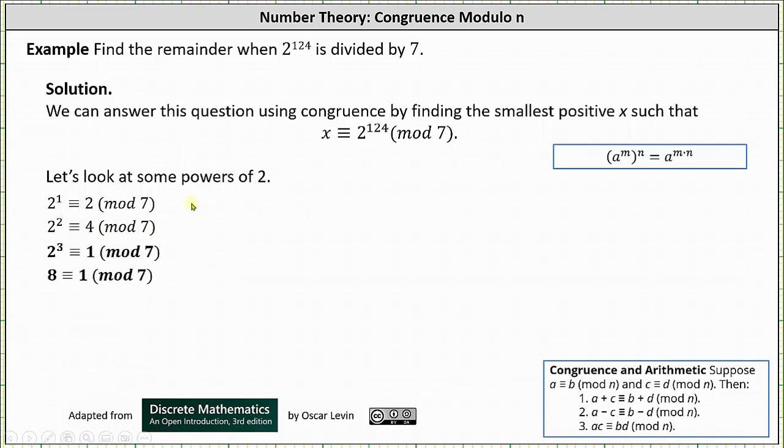Next we have 2 cubed or 8. 2 cubed or 8 is congruent to 1 mod 7, since 2 cubed or 8 has a remainder of 1 when divided by 7.